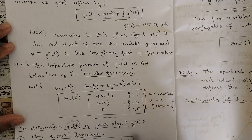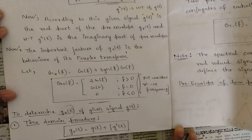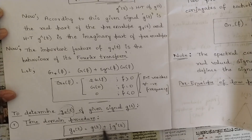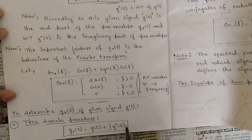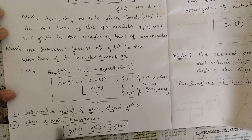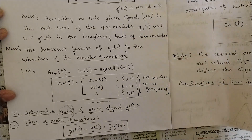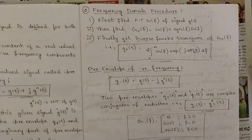To determine G+(t), the pre-envelope in the time domain of the even signal g(t), the time domain procedure gives: G+(t) is equal to g(t) plus j·ĝ(t). This is the formula you should keep in mind.